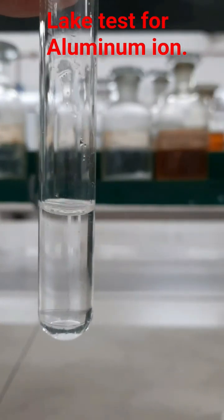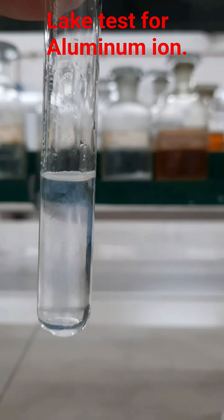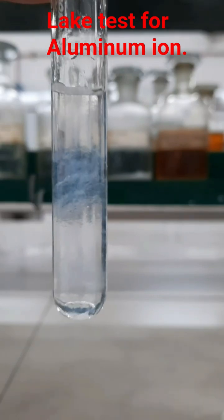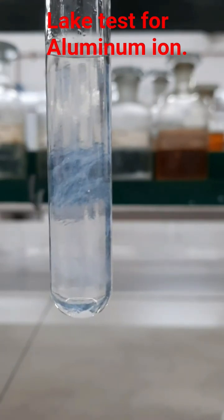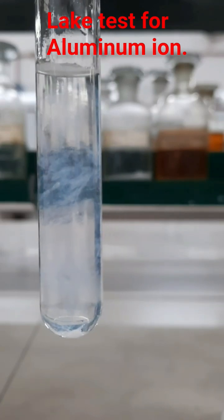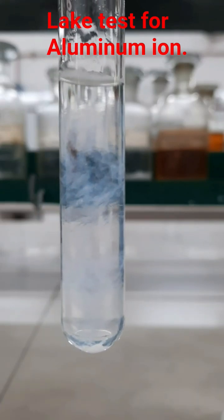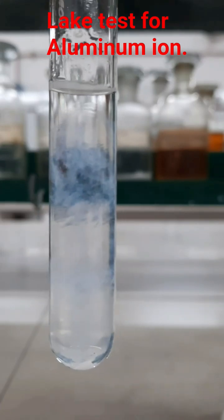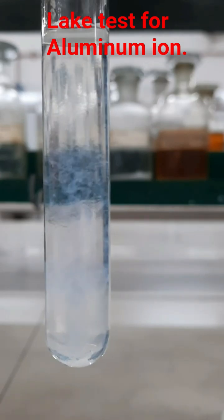After adding this ammonium hydroxide solution, you can see the appearance of gelatinous white precipitate. This will confirm the presence of third group cation and Al3+ ion may be present. Now you have to dissolve this precipitate with the help of dilute HCl.